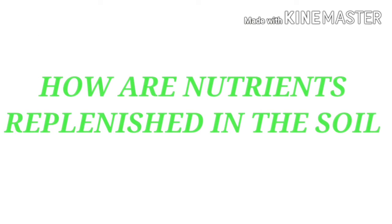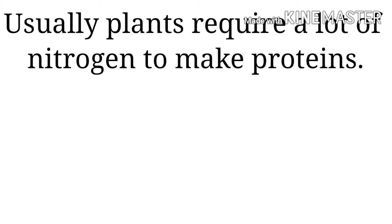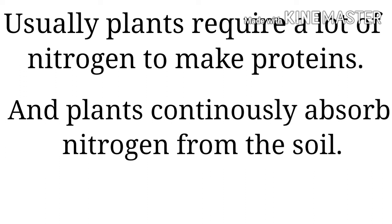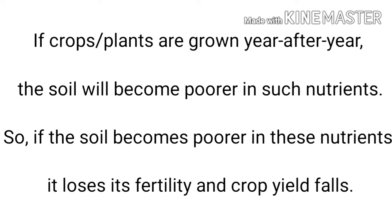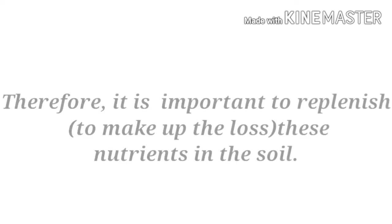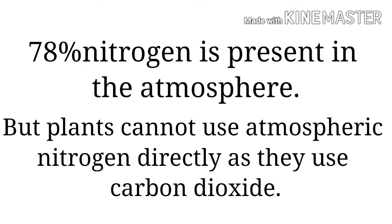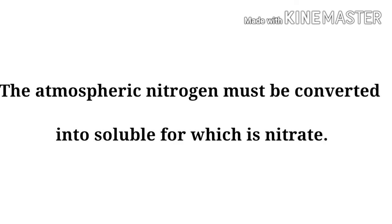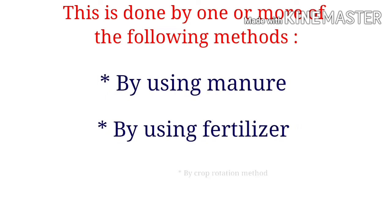Now we come to the last topic of this chapter, which is how nutrients replenish in the soil. Plants need nitrogen to make protein, and plants continuously absorb nitrogen from the soil. If crops are grown year after year, the nitrogen in the soil becomes depleted. If these mineral nutrients are depleted, the soil will lose its fertility and crop yield will also fall. Therefore, it is important to replenish these nutrients in the soil. This is done by one or more of the following methods: by using manure, by using fertilizers, and by the crop rotation method.